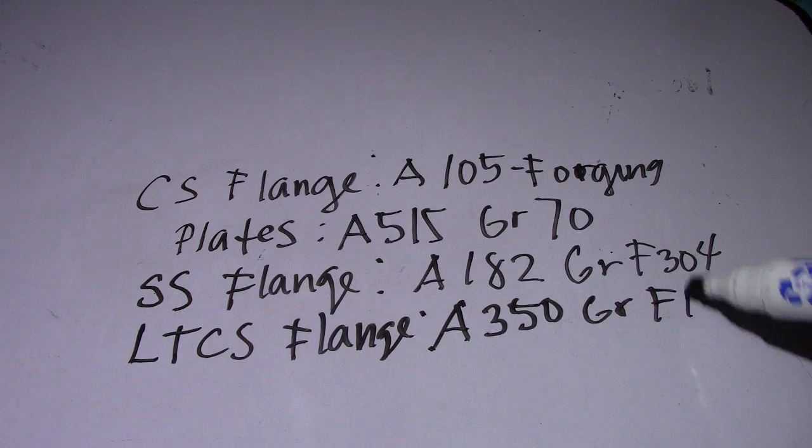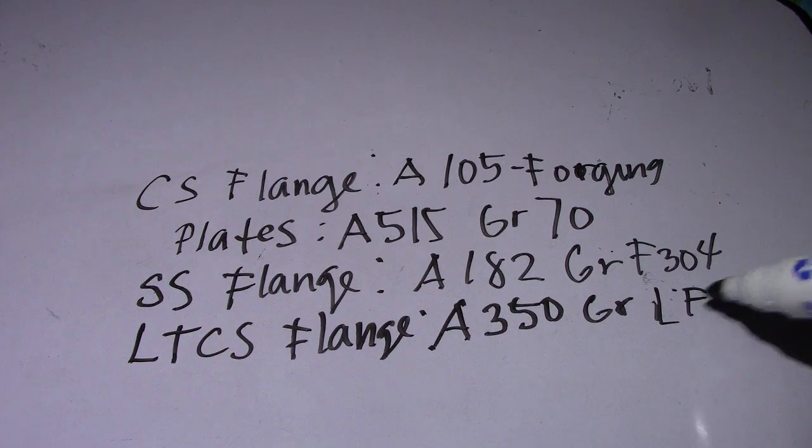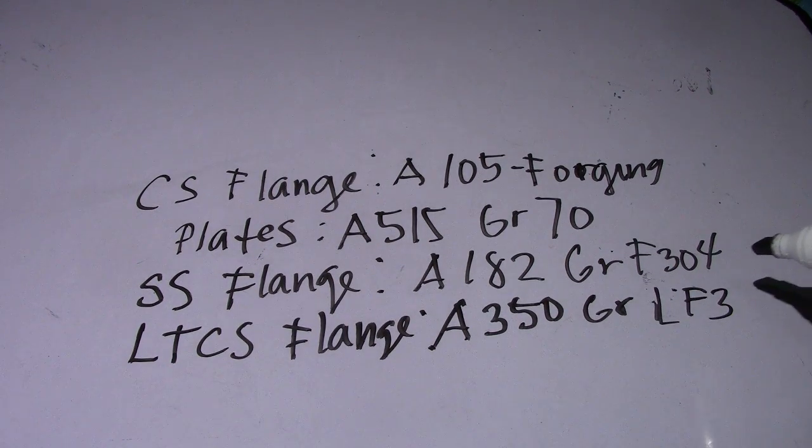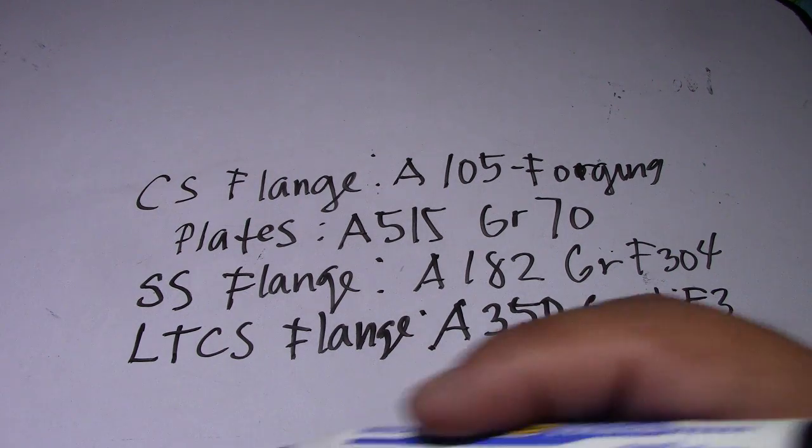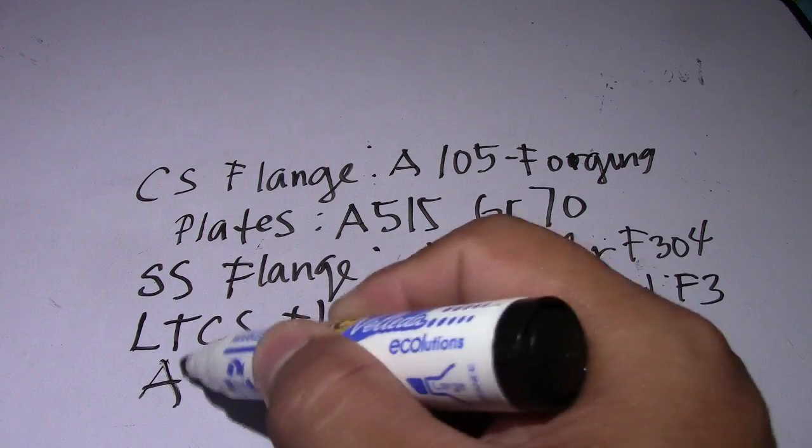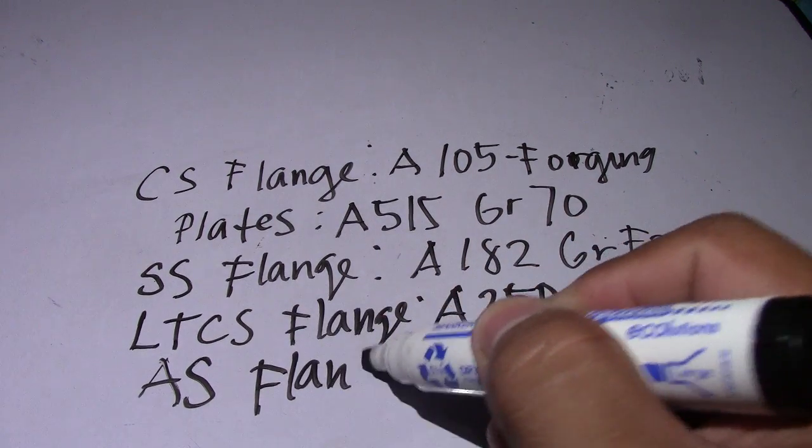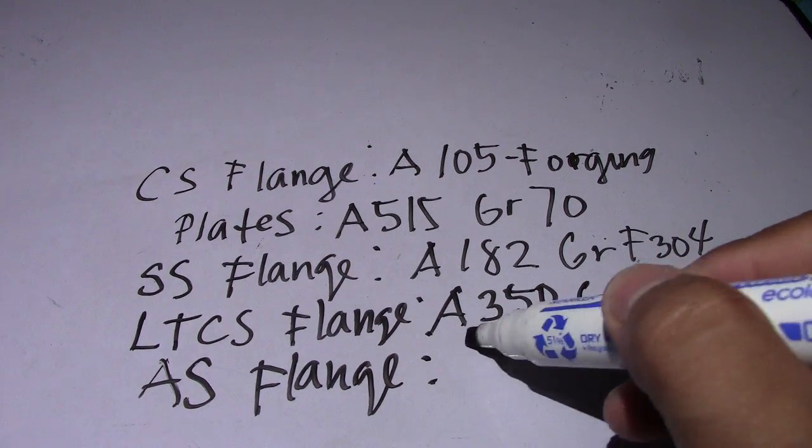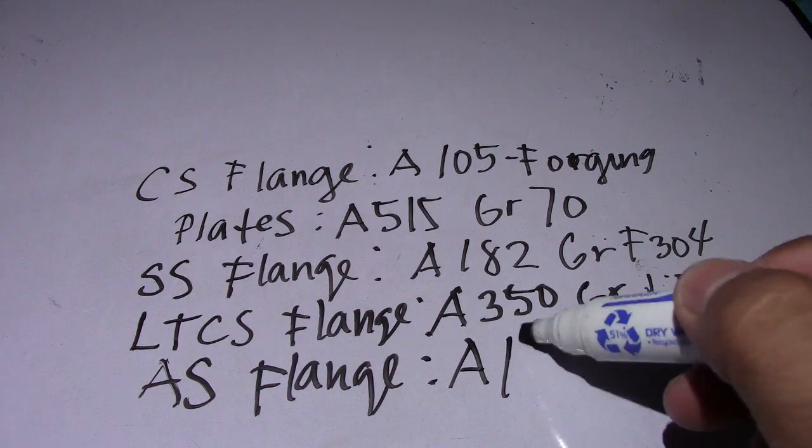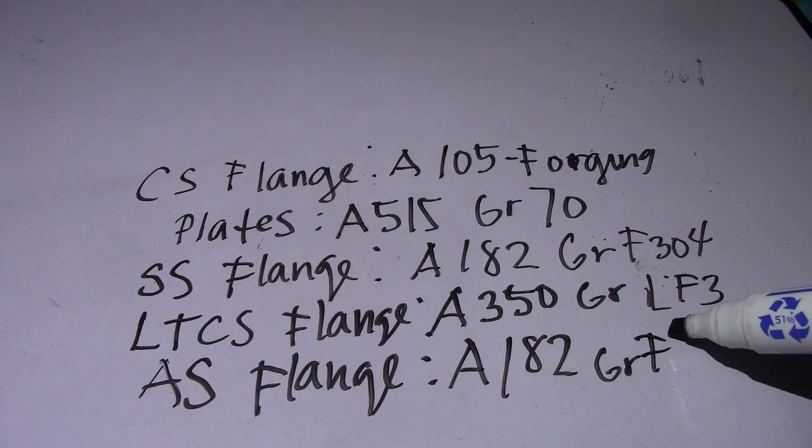And AS - AS is alloy steel flanges. This is a specification of A182 Grade F11.